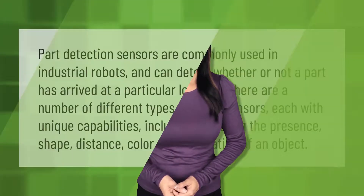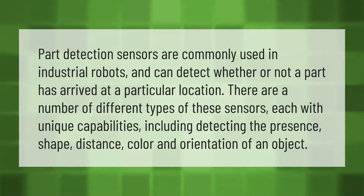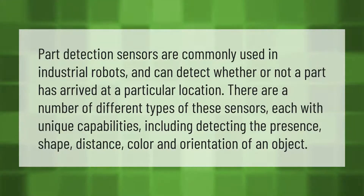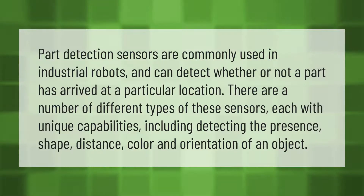Part detection sensors are commonly used in industrial robots and can detect whether or not a part has arrived at a particular location. There are a number of different types of these sensors, each with unique capabilities, including detecting the presence, shape, distance, color, and orientation of an object.